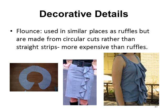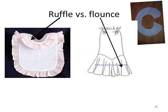A flounce is similar to a ruffle but is made from a circular pattern rather than straight strips, so it uses more fabric and is more expensive. The main way to tell the difference is that a ruffle will have gathering along the seam line, while a flounce creates the same effect on the bottom edge but has no gathering or creases where it connects to the garment — that is the main distinguisher between a ruffle and a flounce.